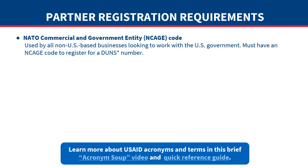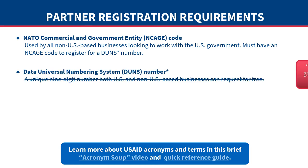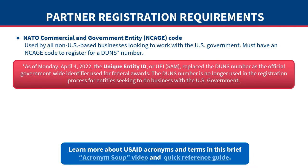Both U.S. and non-U.S.-based organizations must complete required registrations to be eligible to become USAID contractors or award recipients. Before applying for any type of award, your organization must register and receive several different codes. Each of these registrations is free. If you are a non-U.S.-based business, you must first apply for a NATO commercial and government entity code, called an NCAGE code. Once you have the NCAGE code, you can apply for a DUNS number — a unique, nine-digit number you can request for free.